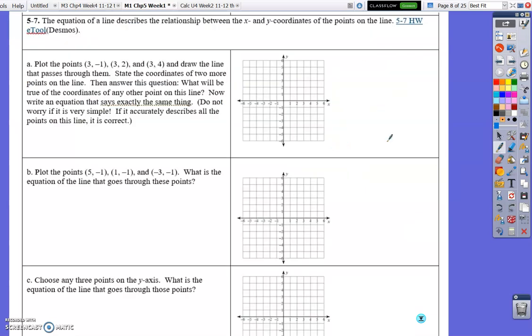5-7. The equation of a line describes the relationship with the x and y coordinates. If you want to look at the E tool, you certainly can. It's kind of nice, but especially if you're having issues, plotting numbers, you aren't really sure. It's good. 3, negative 1, 3, positive 2, 3, 4. Let's read what it says. State the coordinates of two more points that will be on this, oh, draw a line that passes through them, excuse me.